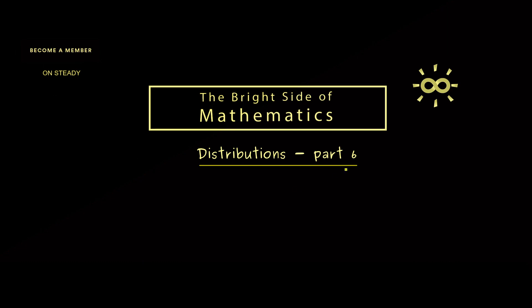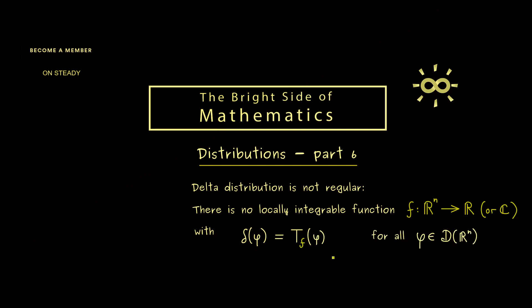In today's part 6 we will show that the delta distribution is not a regular distribution. So usually we say it's a singular distribution. More concretely this means there is no locally integrable function f defined on R^n with values in R or C as always, with the property that delta of φ is the same as T_f of φ. And of course this property should hold for all test functions φ.